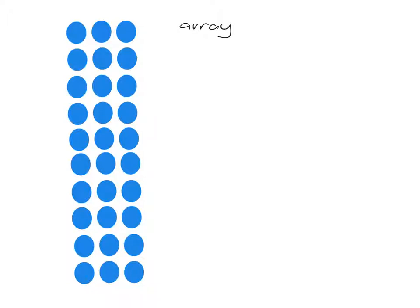And this is a nice format to lay it out in because it allows us to see certain things very nicely and easily. So this array, for example, that I've got here is showing you 10 lots of 3.